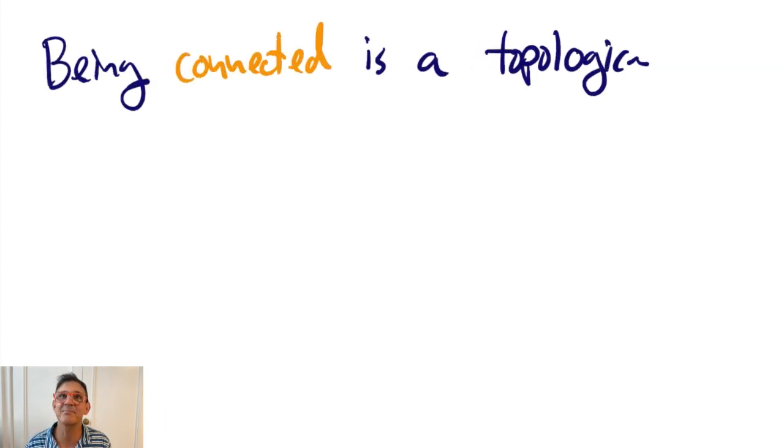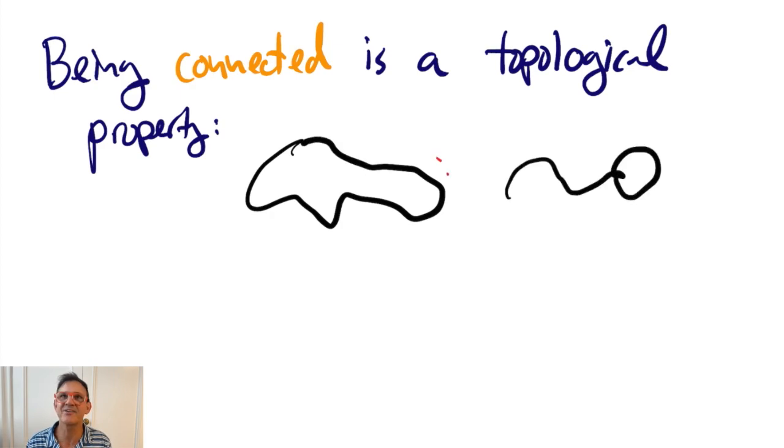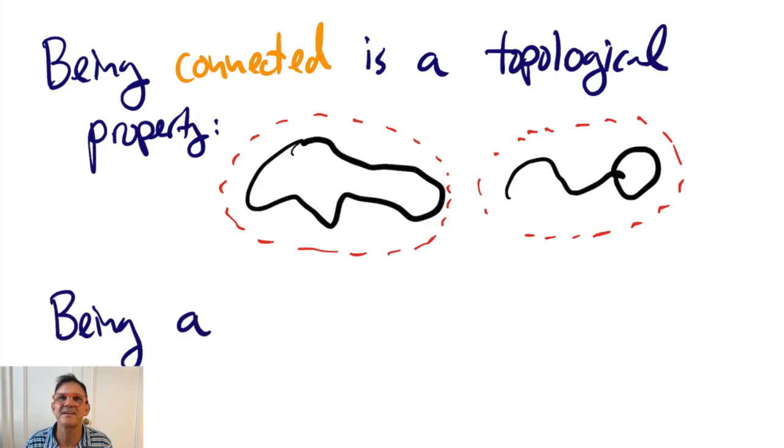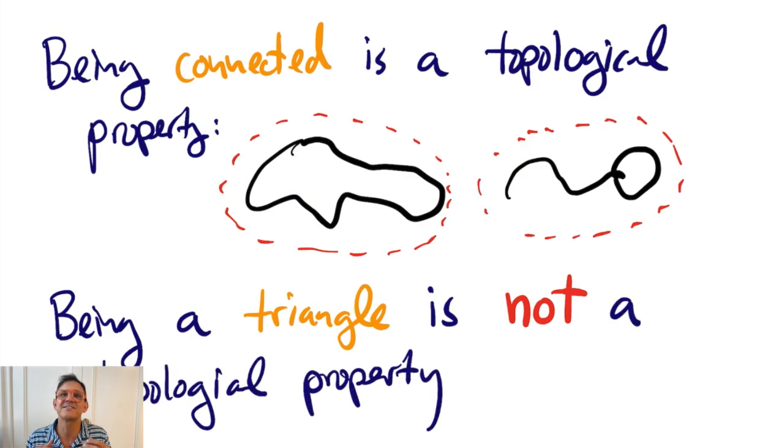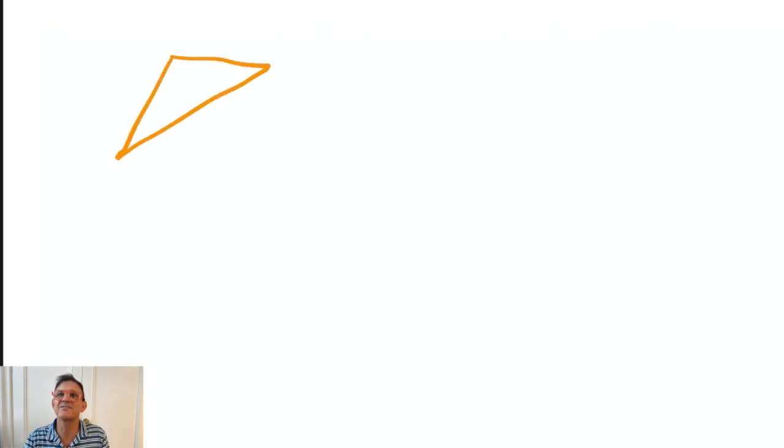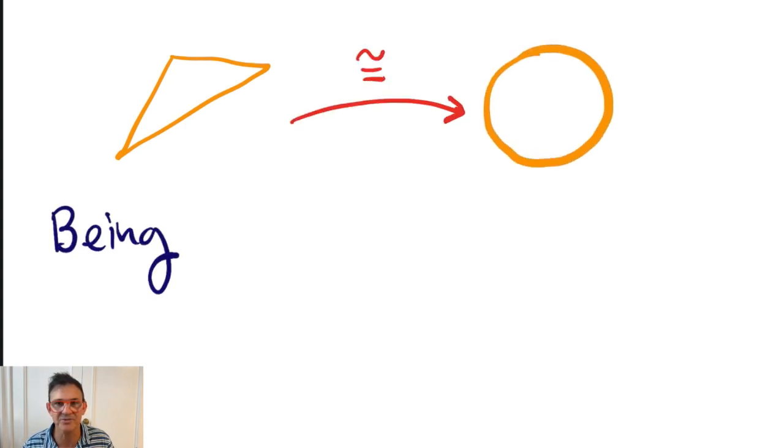For example, being connected is a topological property. Here, I've drawn a space that is not connected. It can be separated by two disjoint open sets. For a non-example, a subset of the plane being a triangle is not a topological property. The reason is that there exist homeomorphisms from the plane to itself that map triangles to non-triangles, like circles, for example.